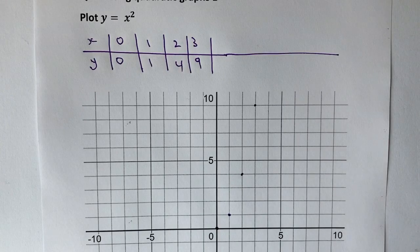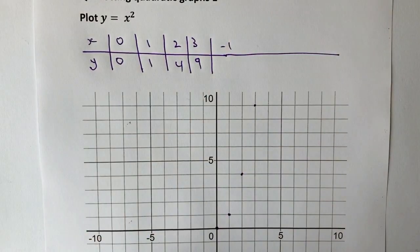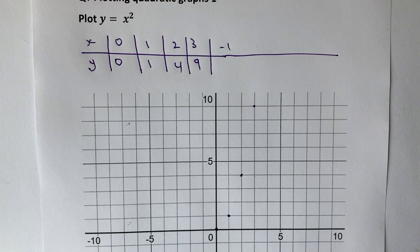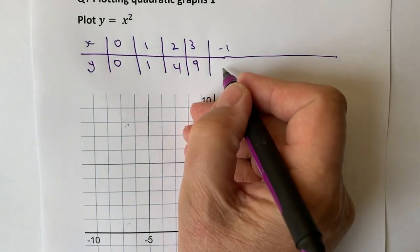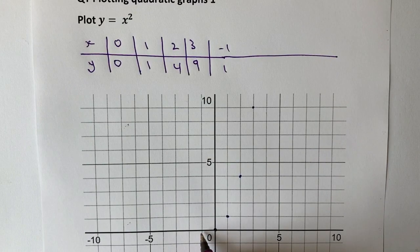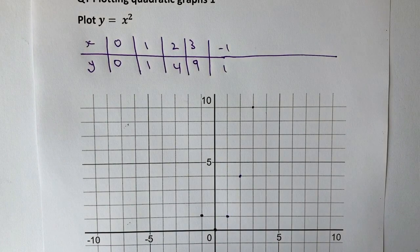I need to look now at the left-hand side. So I think it seems to make sense to do minus 1. So I'm going to do minus 1. And don't forget, minus 1 squared is the same as minus 1 times minus 1. And minus times minus is a positive. So I'm going to get 1. So if I come along to minus 1 here, I'm going to get 1 for my y value.